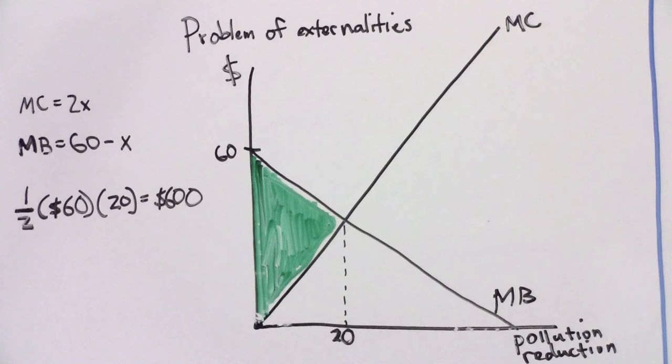So how do we get your neighbor to reduce his pollution by 20 pounds? There are multiple solutions to the problems posed by environmental externalities. Perhaps the most obvious solution is government intervention. The government could simply mandate that your neighbor reduce his pollution by 20 pounds. To do this, though, the government would need to know both the marginal cost and marginal benefit of pollution reduction. Calculating the marginal costs and marginal benefits of pollution reduction is difficult, but not impossible. We'll discuss this later when we learn about benefit-cost analysis.